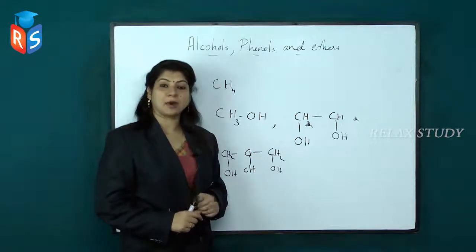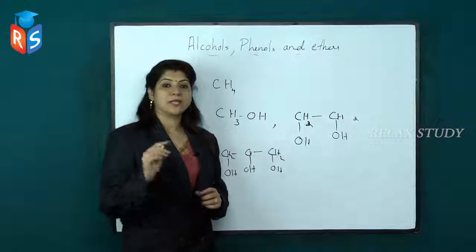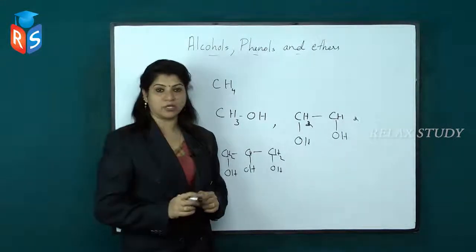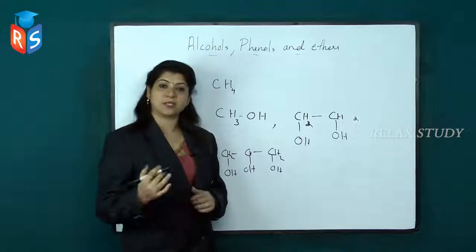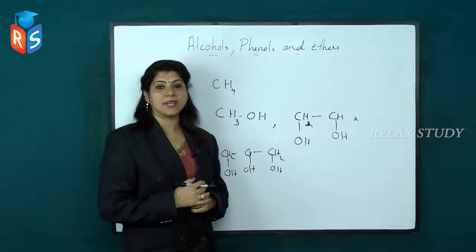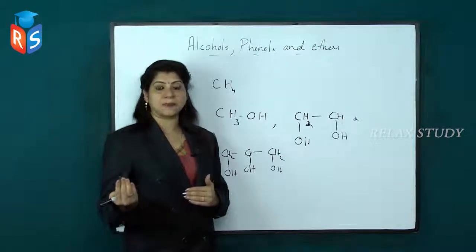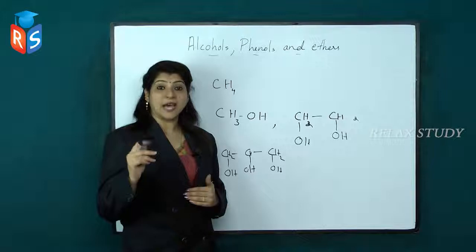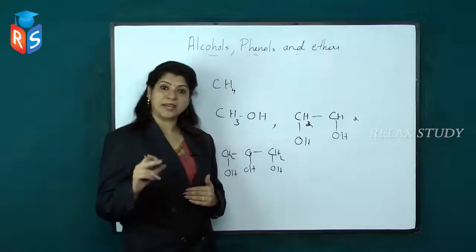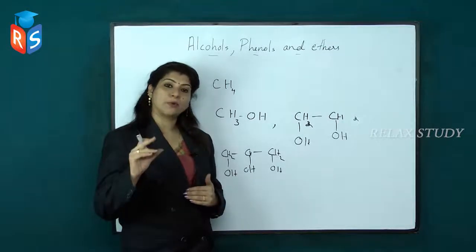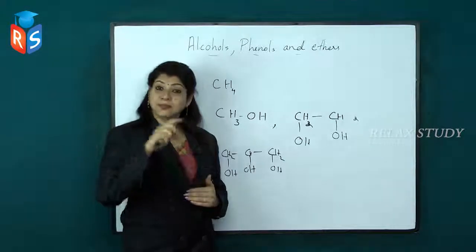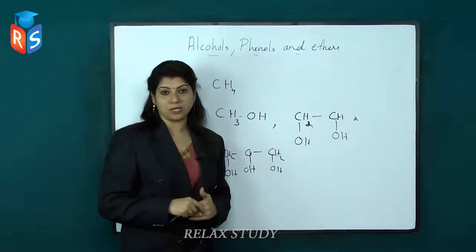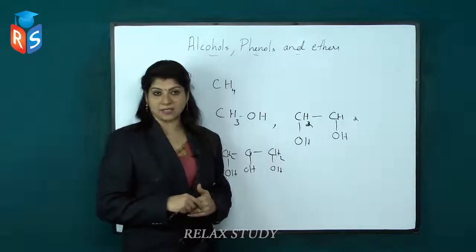Next is about the benzene ring. If a hydrogen from the benzene ring gets replaced by only one OH group, it is called monohydric. If two hydrogen atoms get replaced by OH groups, it is called dihydric — that dihydric compound possesses two OH groups. And if three hydrogens get replaced by OH groups, it is called trihydric.